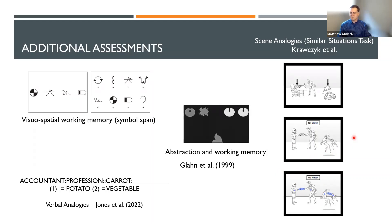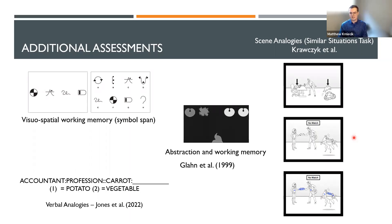Looking at performance between the two groups across all these tasks, higher performers performed better on tasks involving relations and working memory than those who were low performers on the fractal task. We think that attention to and maintenance of relational information, especially across delays — evoking working memory — is an important distinguishing element between these two groups.